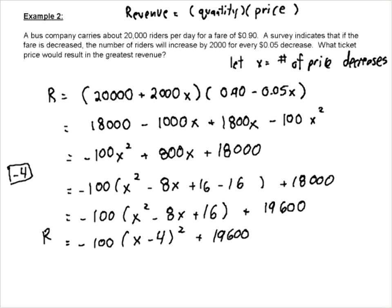So there is our equation. So now what we have to figure out is we have to go back and answer the question. Now the question doesn't ask us what the greatest revenue would be. Here's the greatest revenue, 19,600. The question asks us what price would result in the greatest revenue. So the price is going to result in the greatest revenue when x equals 4. Now what does x equal? X is the number of price decreases. So we want to figure out the price.